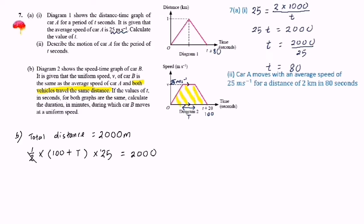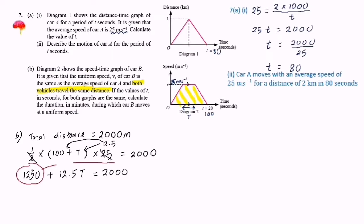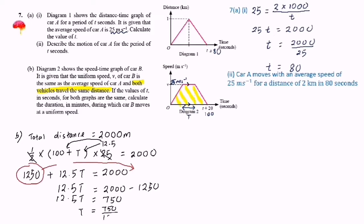Simplifying: 12.5 times (100 plus T) equals 2,000. Expanding the bracket: 12.5 times 100 equals 1,250, plus 12.5T equals 2,000. Moving 1,250 to the right-hand side: 12.5T equals 2,000 minus 1,250, so 12.5T equals 750. Therefore, T equals 750 divided by 12.5, giving T equals 60.